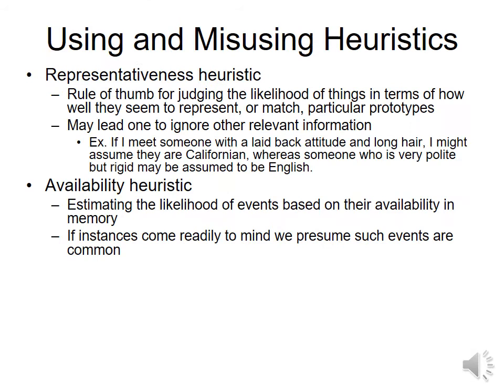Two important heuristics — and these pop up on the AP exam and will definitely appear in essays. The representativeness heuristic is a mental shortcut for judging how likely things are to represent or match a prototype in your head. It's essentially a stereotype, and it may lead you to ignore other relevant information. For example, knowing someone is coming from England, you might look for someone who fits your Harry Potter-based mental image.